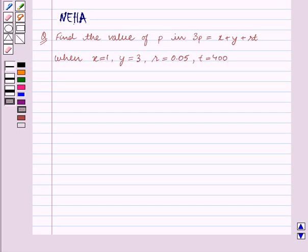Hello and welcome to the session. In this session we will discuss the following question: find the value of p in 3p = x + y + rt, when x = 1, y = 3, r = 0.05, and t = 400. Let's start the solution.